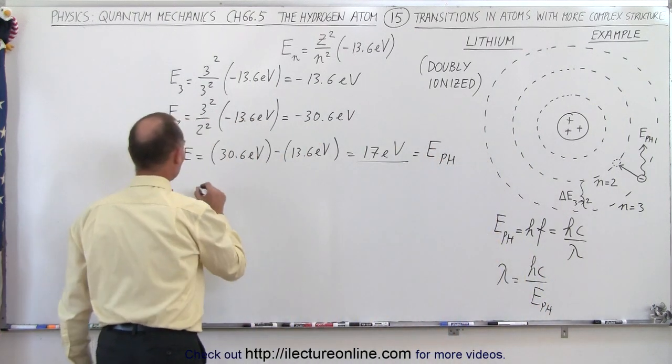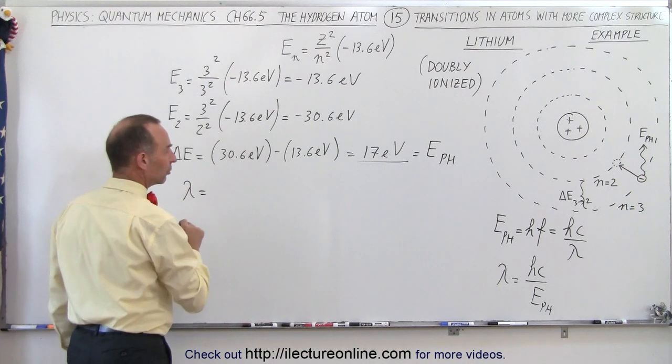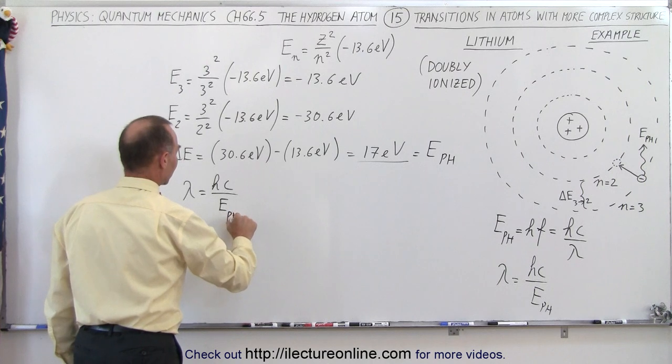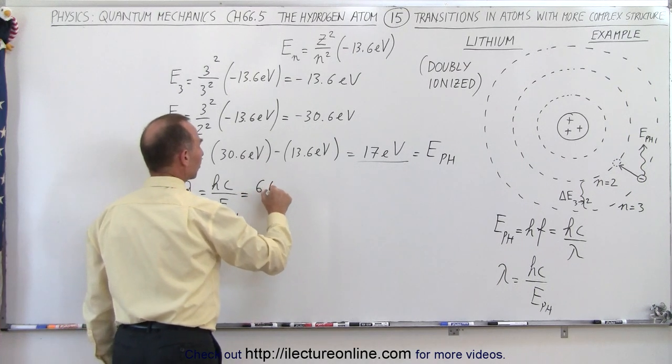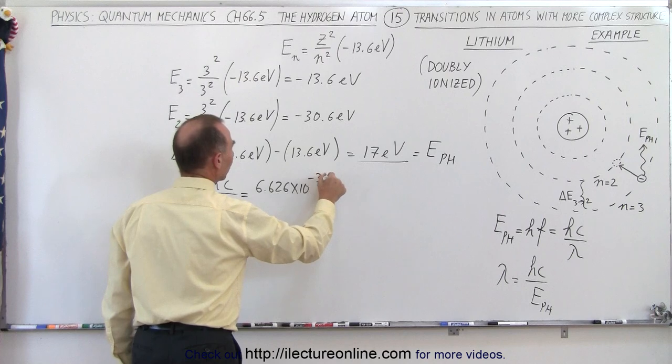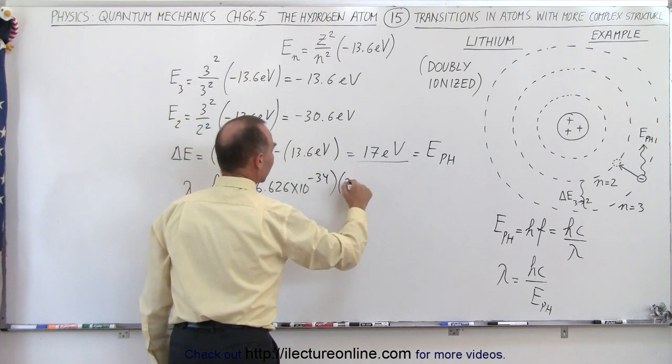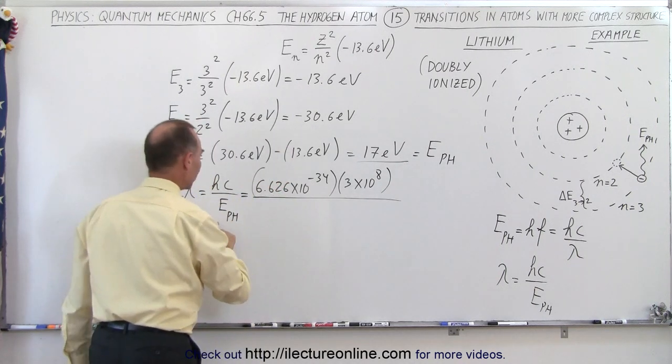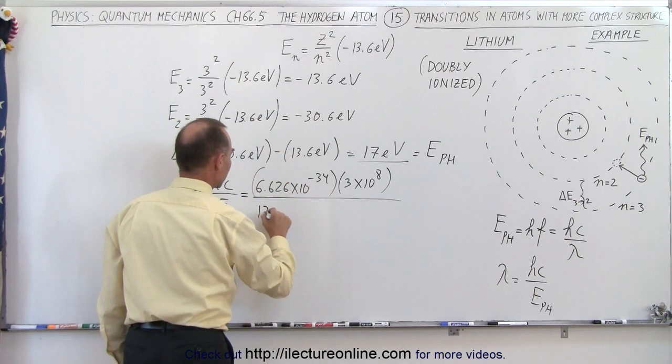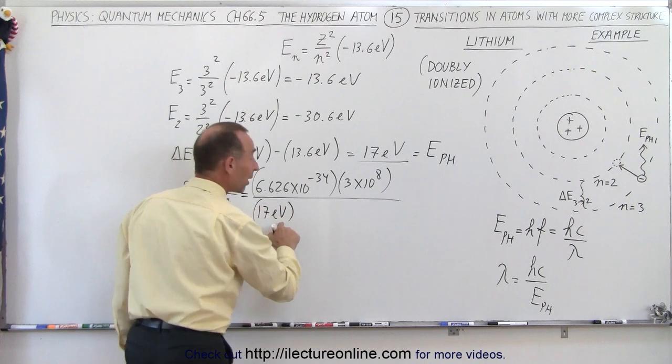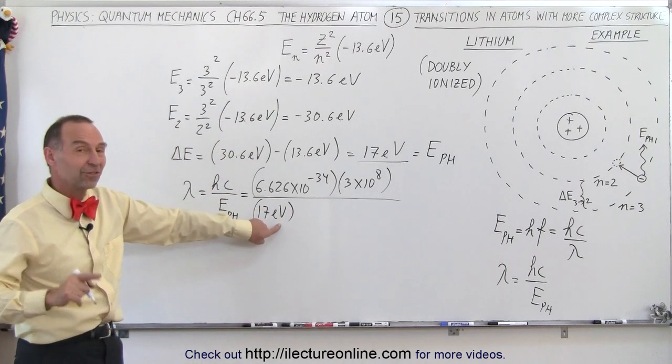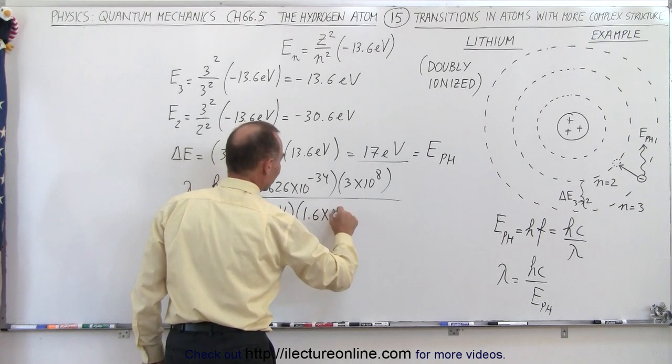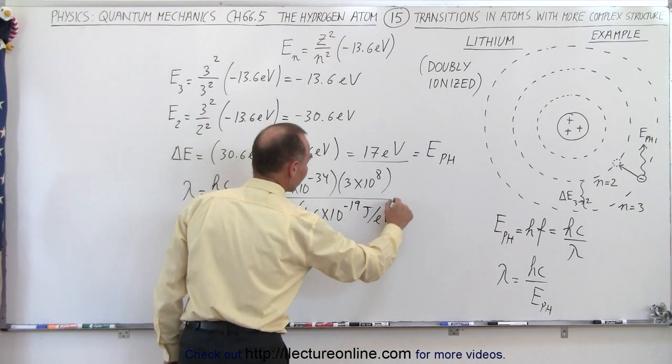So using that equation, we can say that the wavelength, lambda, is equal to hc divided by the energy of the photon, which in this case is 6.626 times 10 to the minus 34. Speed of light, 3 times 10 to the 8. Again we leave off the units to make it cleaner, divided by energy of the photon, 17 electron volts. Now the reason why I put in the unit there, because electron volts is not the standard unit, so we have to convert to joules, 1.6 times 10 to the minus 19 joules per electron volt.